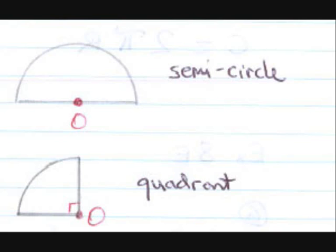And a quadrant. Like a quarter, a quadrant. If you've got four quadrants, you've got one circle.